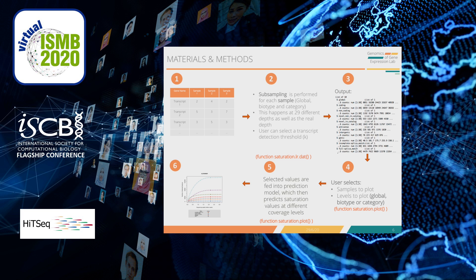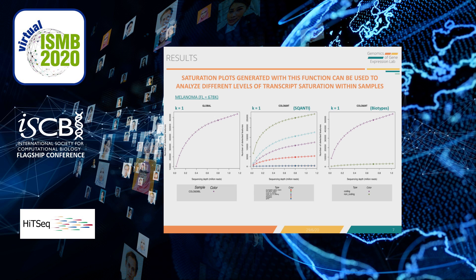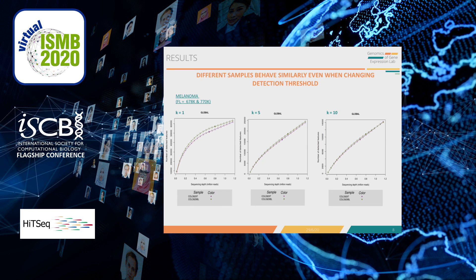Now we will move on to the results obtained. As we can see here, the saturation plots generated with this function can be used to analyze different levels of saturation within samples. For one of the samples from the melanoma set using a threshold of K equal to 1, we can analyze the global saturation as well as the SQANTI classification and the biotype classification. We also observed that different samples within a dataset behave similarly even when changing the detection threshold, as seen with both melanoma samples.